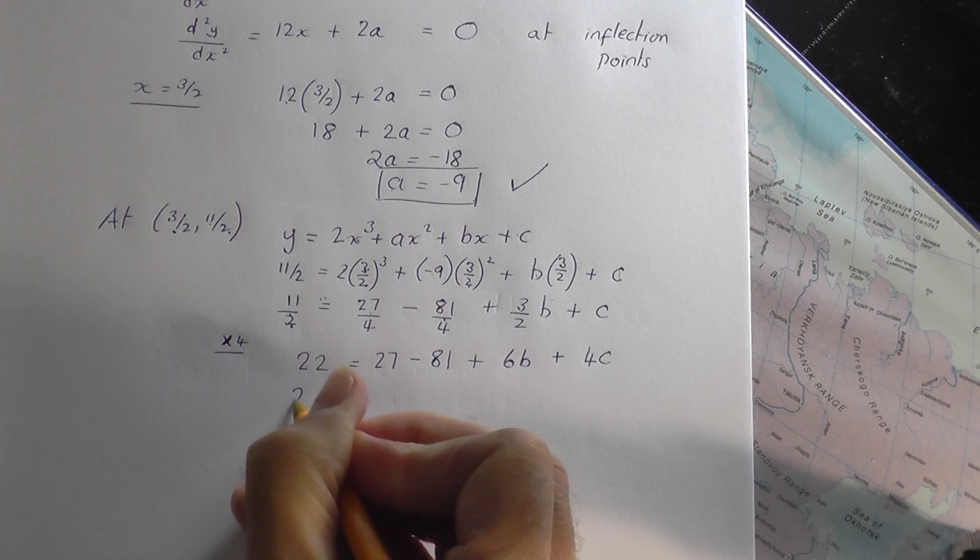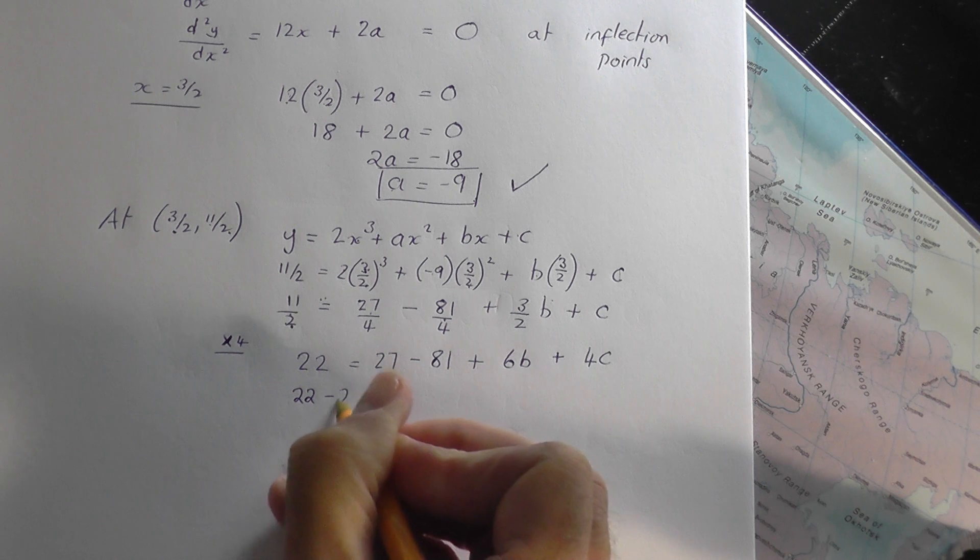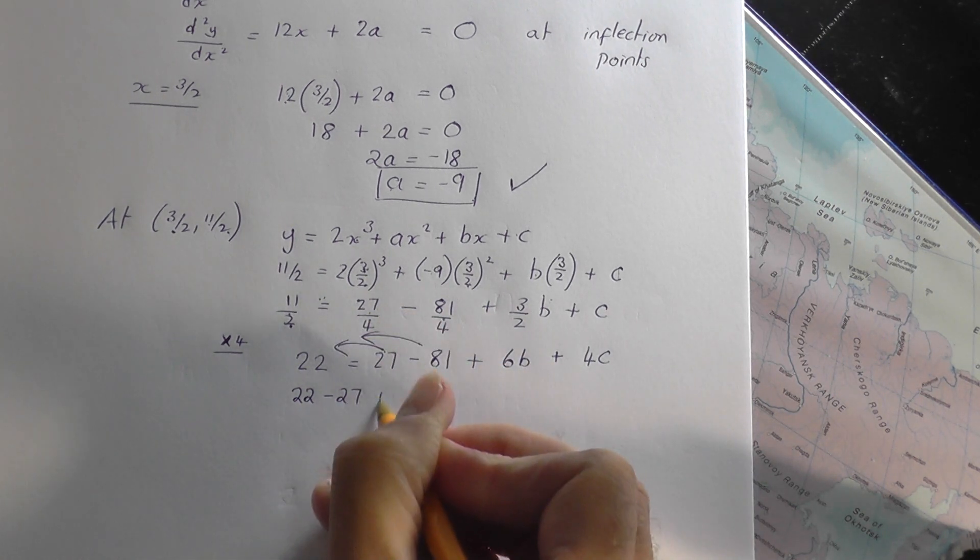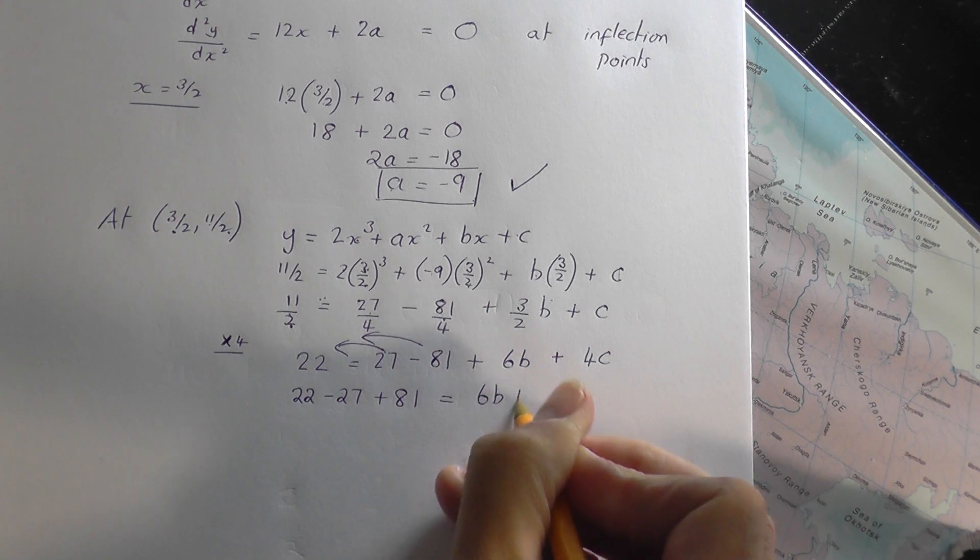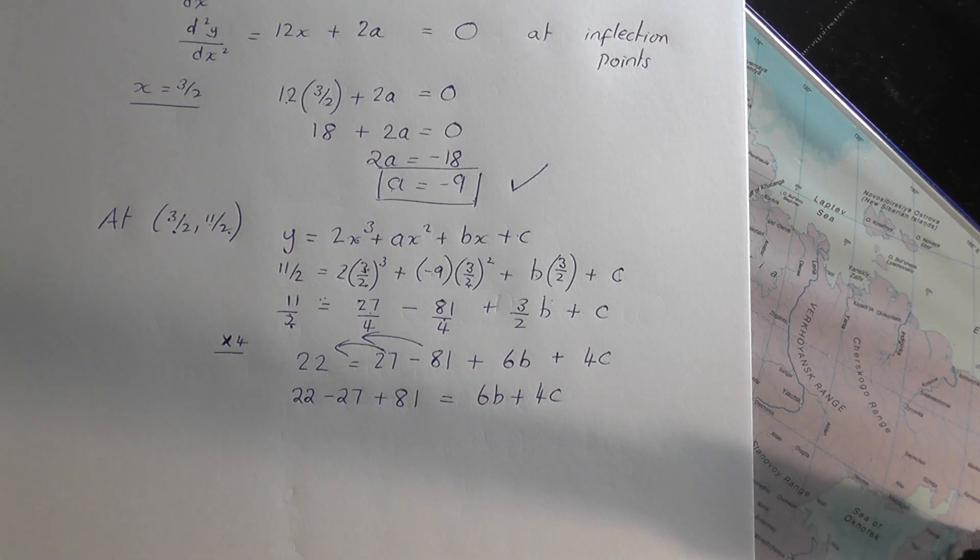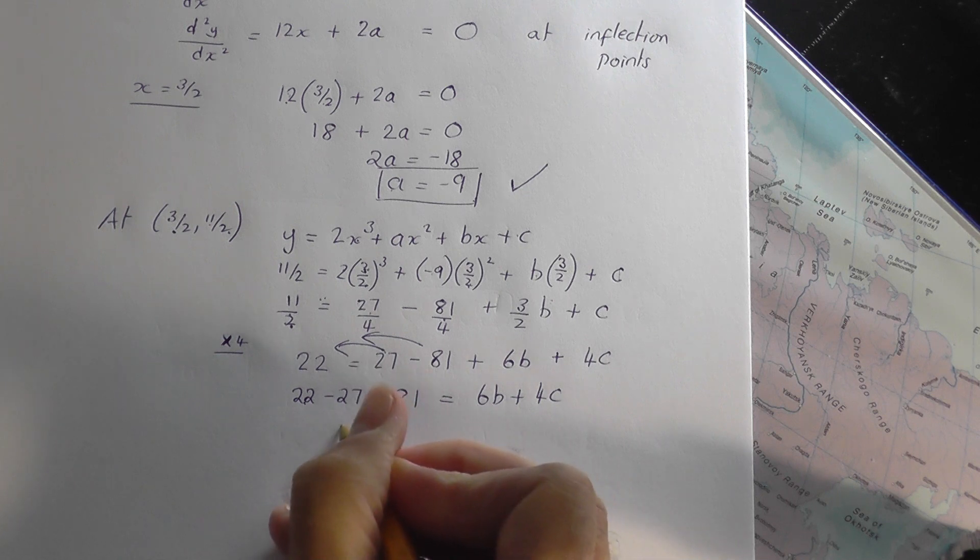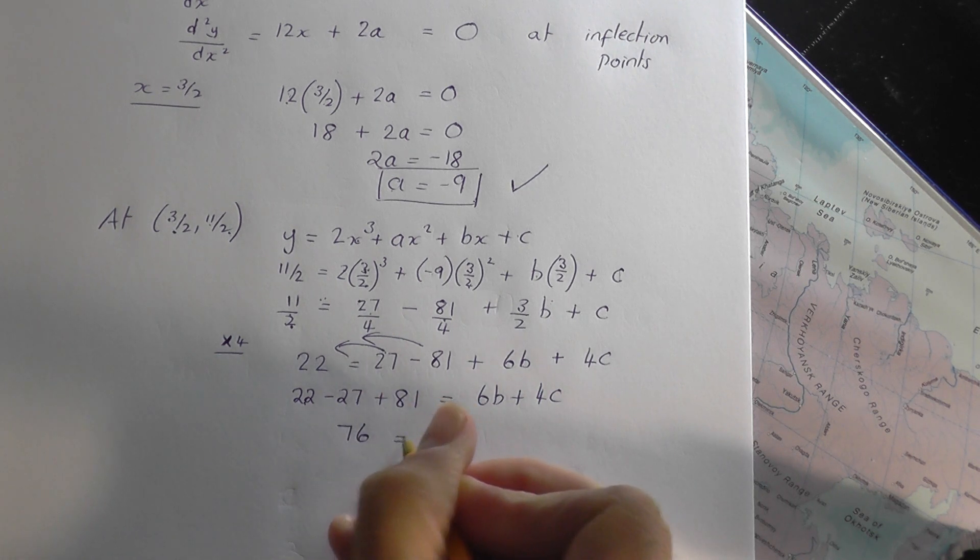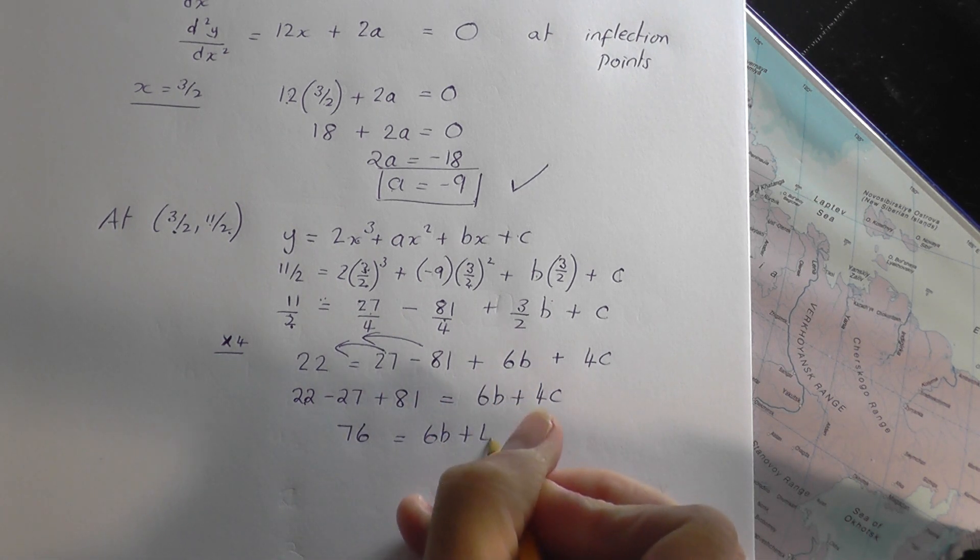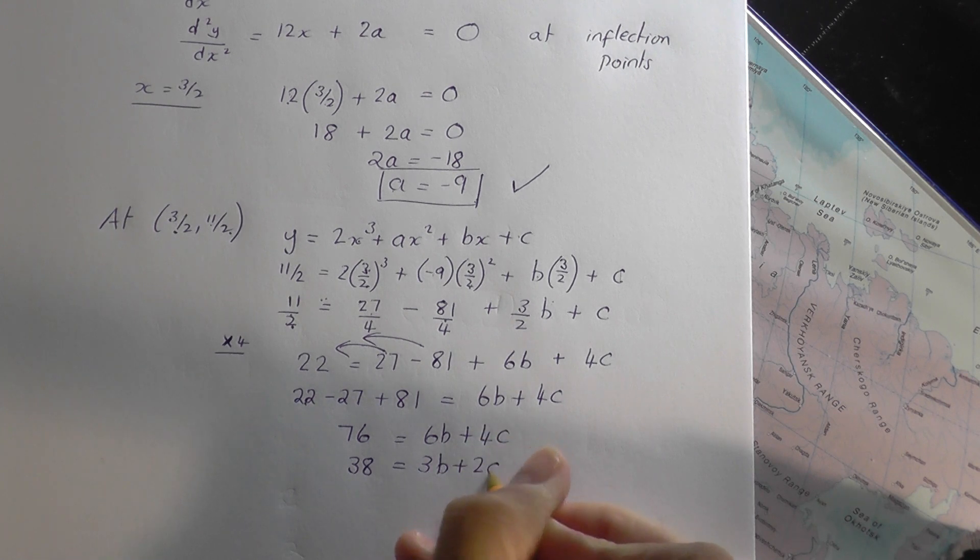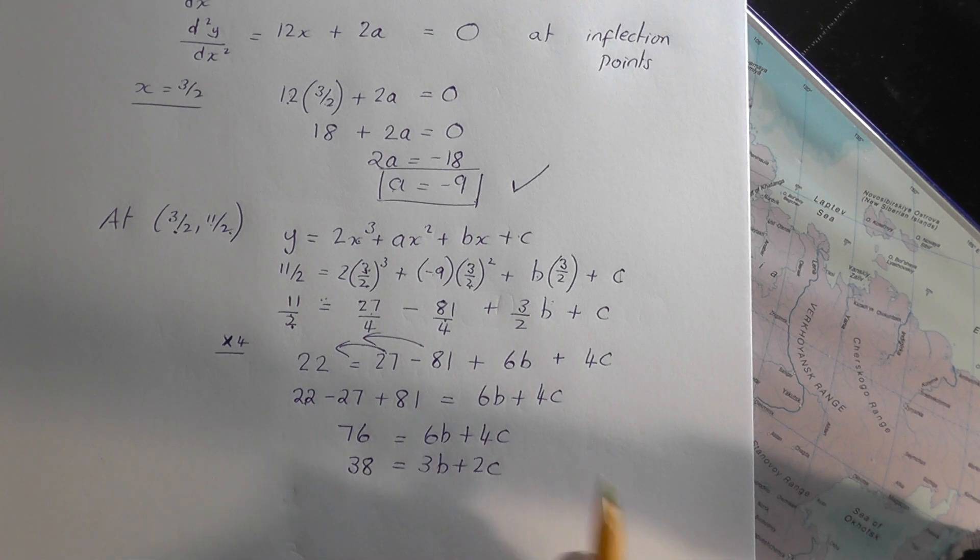Let's now take everything that we need to to the other side. So it becomes minus 27 on the other side, and that goes over, becomes plus 81, and you're left with 6b plus 4c. So 81 plus 22 is 103. Take away 27, I think it's 76. You get 6b plus 4c. Divide by 2, perhaps. 38. Divide by 2. Divide by 2.